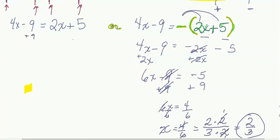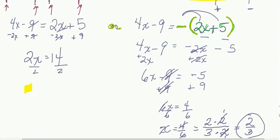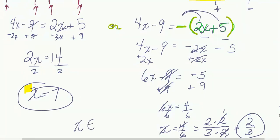For the positive equation, add 9 to both sides and subtract 2x from both sides. The x terms and constants cancel appropriately, leaving 2x equals 14. Divide by 2: x equals 7. So the solution set is x is an element of {2/3, 7}.